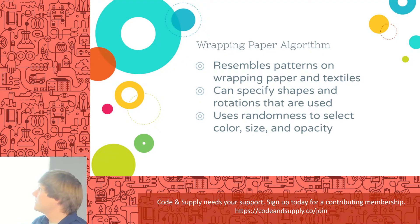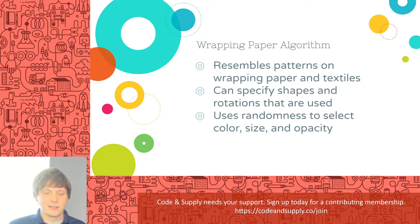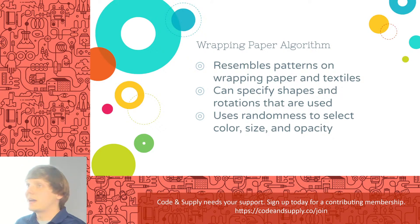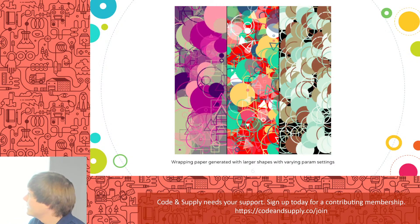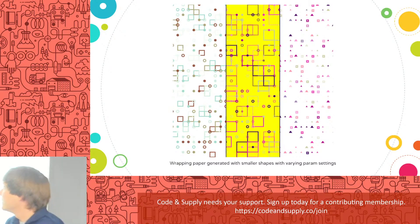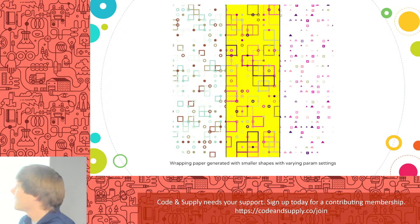The first algorithm we'll look at is the wrapping paper algorithm. Some of the patterns we generate resemble wrapping paper or textile designs, which is why we call it that. You can specify parameters associated with each algorithm — what shapes are going to be drawn, what rotation to apply to those shapes. The algorithm uses some randomness to select colors, sizes, and opacities. Here are three different cropped images that look like a sheet of wrapping paper. We also have more sparse examples using the same algorithm with different parameters.